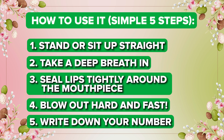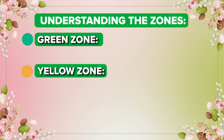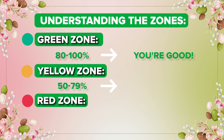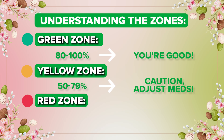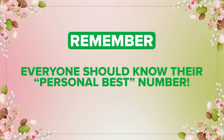Step five, write down the number. You also need to understand three zones. The green zone is 80 to 100 percent — you are good. The yellow zone is 50 to 79 percent — caution, you may need to see a doctor to adjust medications. The red zone is below 50 percent — that's an emergency and you need to take action. Remember, everyone should know their personal best number so they can assess which zone they are in.